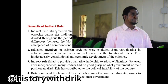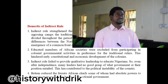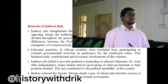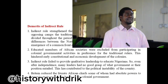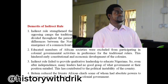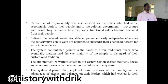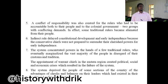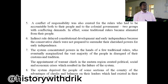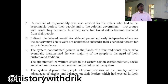Point number four: Britain reduced the African chiefs, some of whom had absolute powers, to puppets or stooges in the hands of the colonial government. Point number five: a conflict of responsibility was created for the rulers who had to be accountable both to their people and to the colonial government — two groups with conflicting demands. As a result, some traditional rulers became alienated from their people.